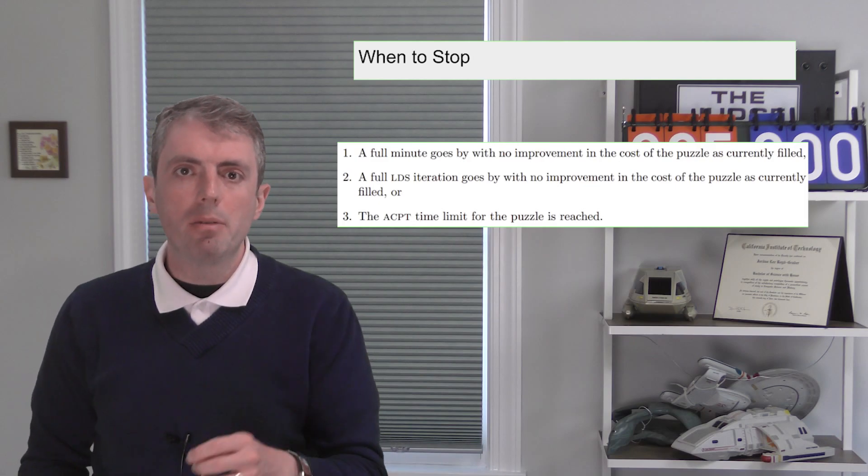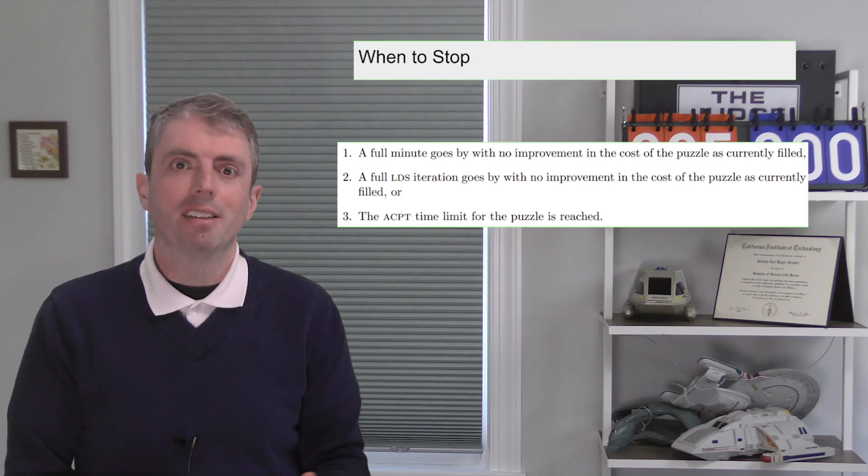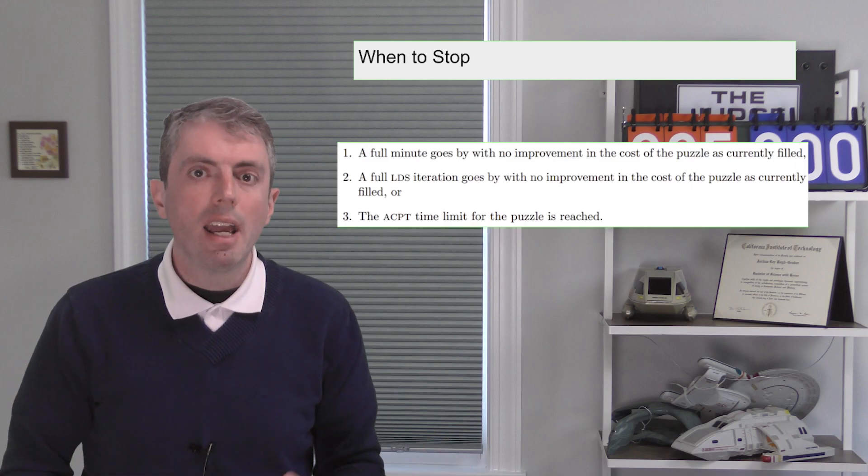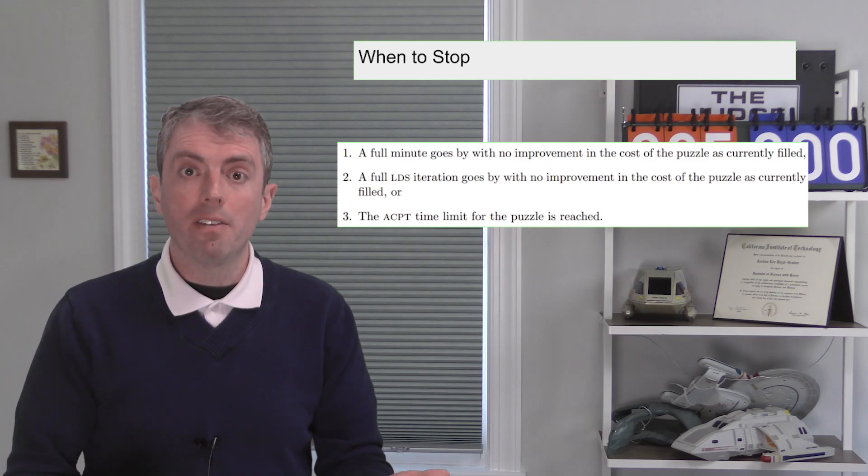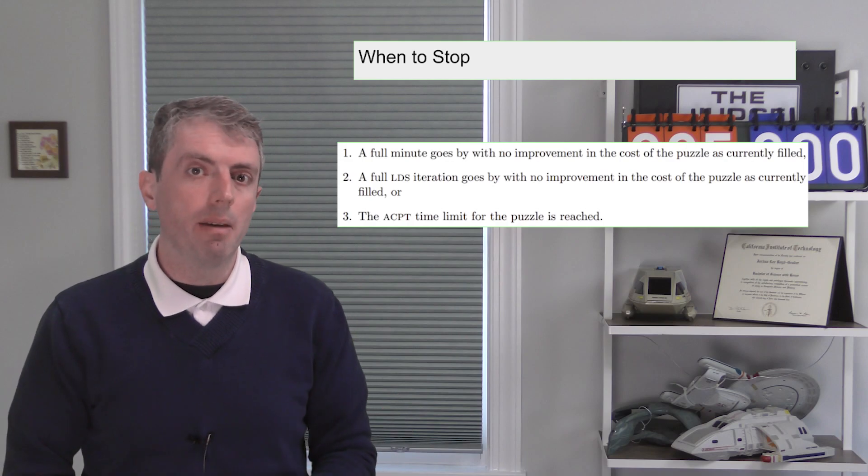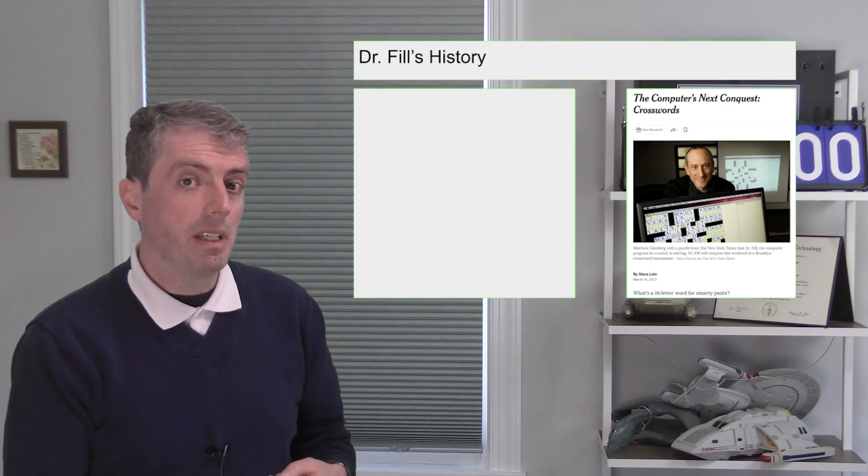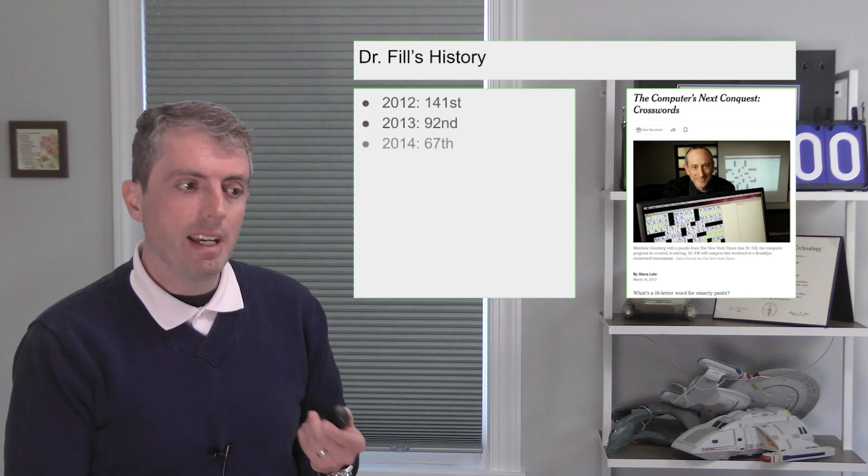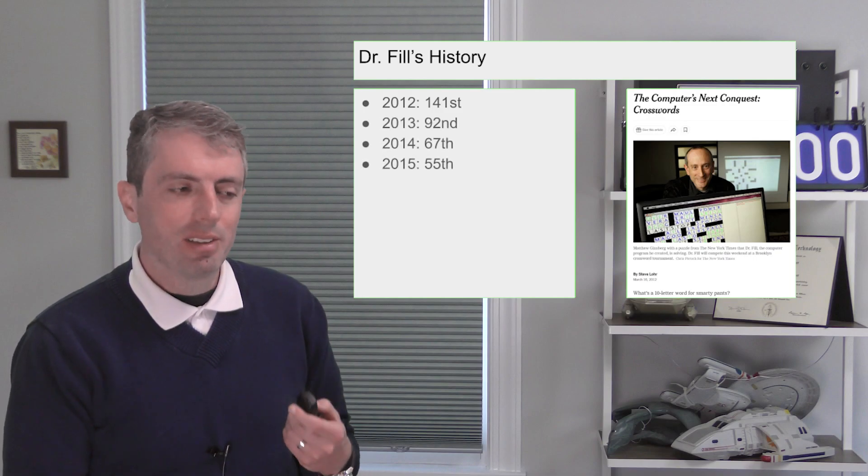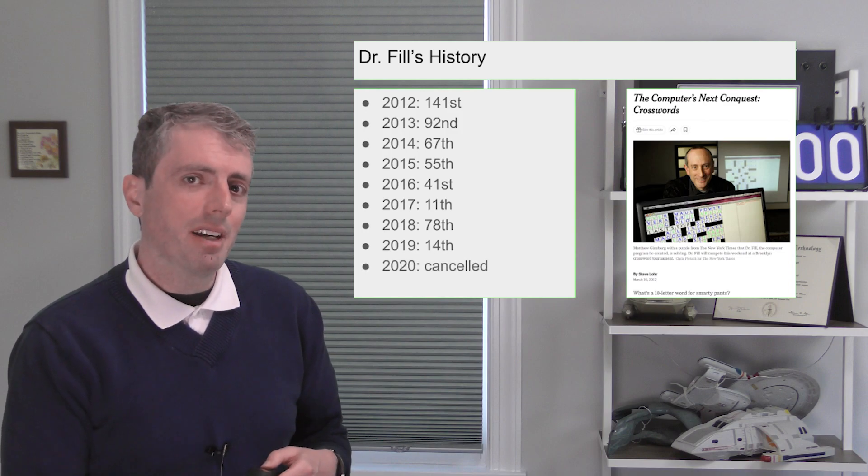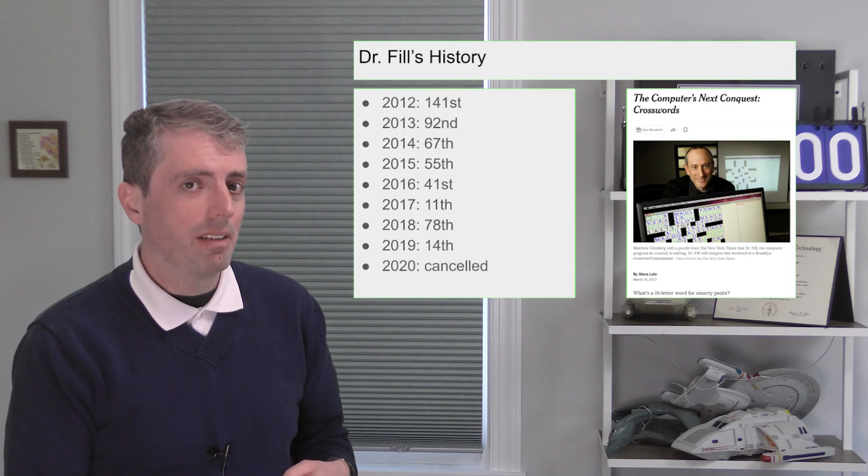Of course, you could keep doing that forever. So when does Dr. Phil know when to stop? Because the goal of Dr. Phil is to beat humans at crossword puzzle competitions, Dr. Phil stops when it hasn't been able to improve the score for a minute, an eternity for a computer, or it has tried to improve all of the puzzle and failed, or it just has run out of regulation time. Over the course of a decade, Dr. Phil started being a fixture at in-person crossword tournaments, working its way up the charts, slowly improving every year with a slight dip in 2018 until it was clearly in the top 20s. Then the in-person competition was cancelled in 2020 for obvious reasons.